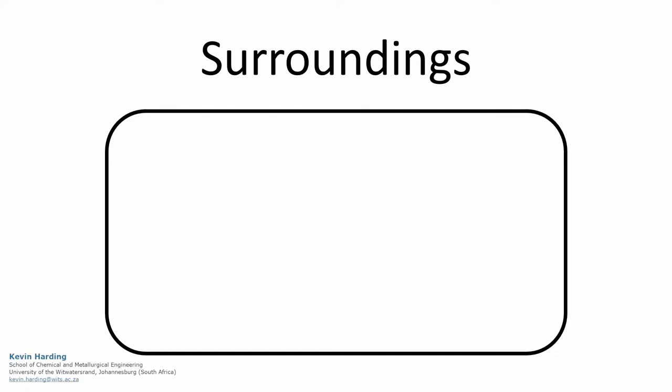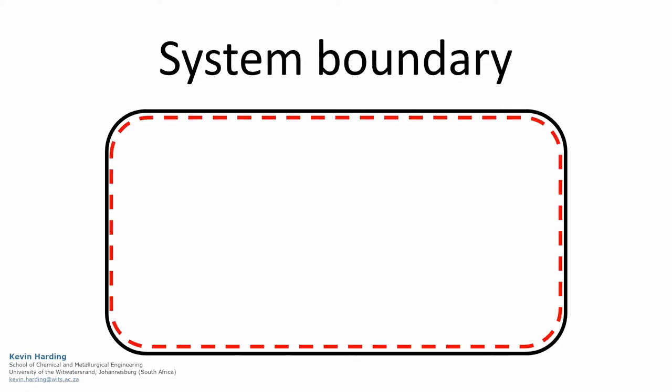A system is the space where we wish to focus our attention and calculations. The space outside the system is known as the surroundings. We refer to the interface between the two as the system boundary.